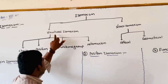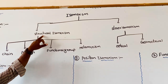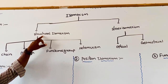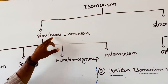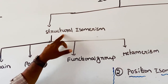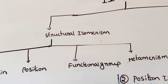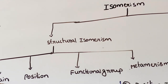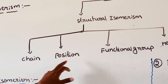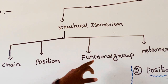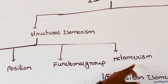What is structural isomerism? Molecular formula is same for two or more compounds but different structures — this is called structural isomerism. Structural isomerism is classified into four types: chain isomerism, position isomerism, functional group isomerism, and metamerism.